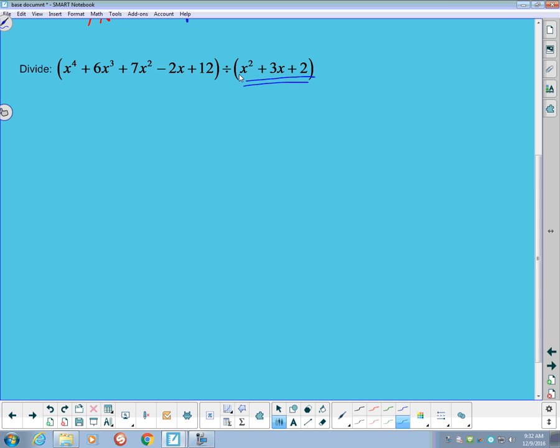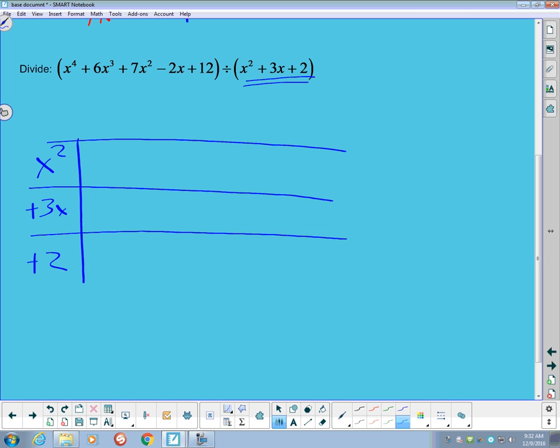So we're going to divide this one by a quadratic trinomial. So we're going to put our x squared plus 3x plus 2 vertically in this direction. Let's see if I can make my lines slightly straighter this time. That's a little bit better.